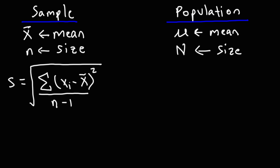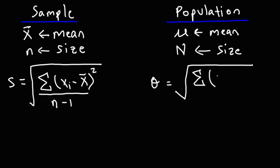To calculate the standard deviation of the population, use σ (sigma) instead of s. The formula is the square root of the sum of the squared differences between each data point and the population mean, divided by the population size N — not n minus 1. That is the key difference between sample and population standard deviation.